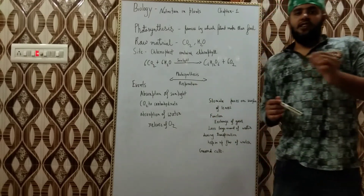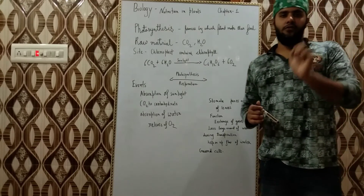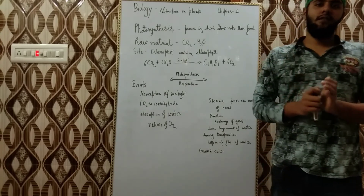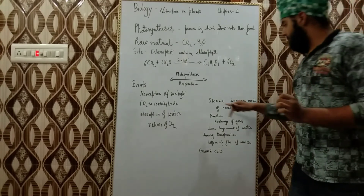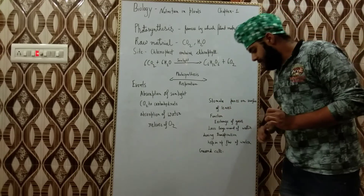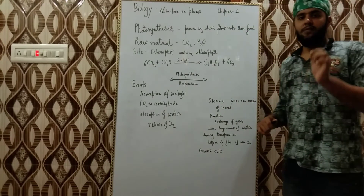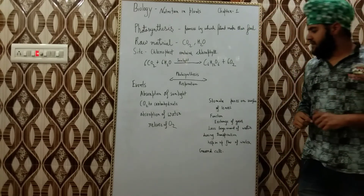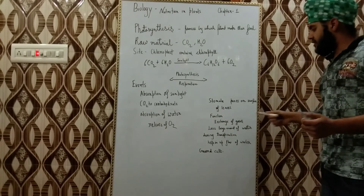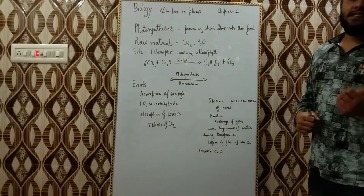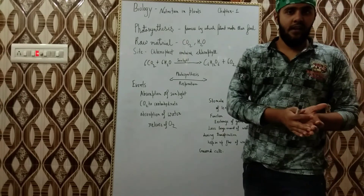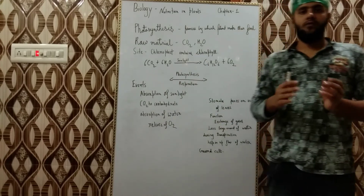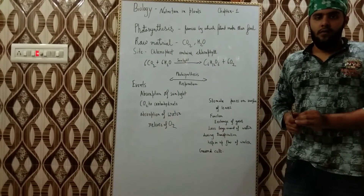These are the exchange of gases. There are tiny pores in the plant through which the exchange of gases occurs. These pores are on the surface of the leaves. The water is also absorbed from the roots of the plants.